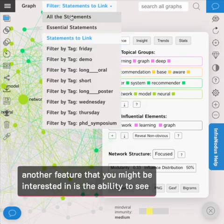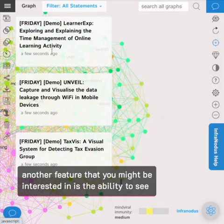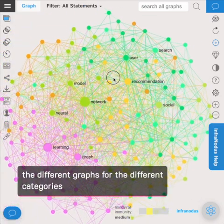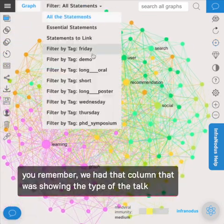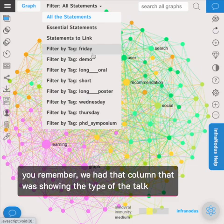Another feature that you might be interested in is the ability to see the different graphs for the different categories. So you remember we had this column which was showing the type of the talk.